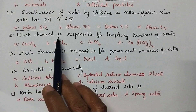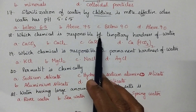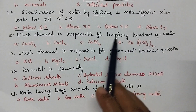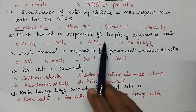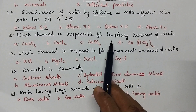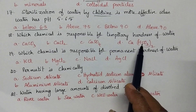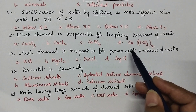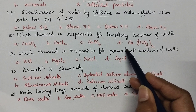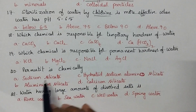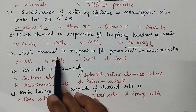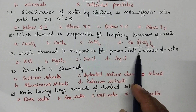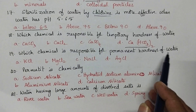Which chemical is responsible for temporary hardness of water? In general, temporary hardness is caused by the bicarbonates of calcium and magnesium. So, calcium bicarbonate is the right option.